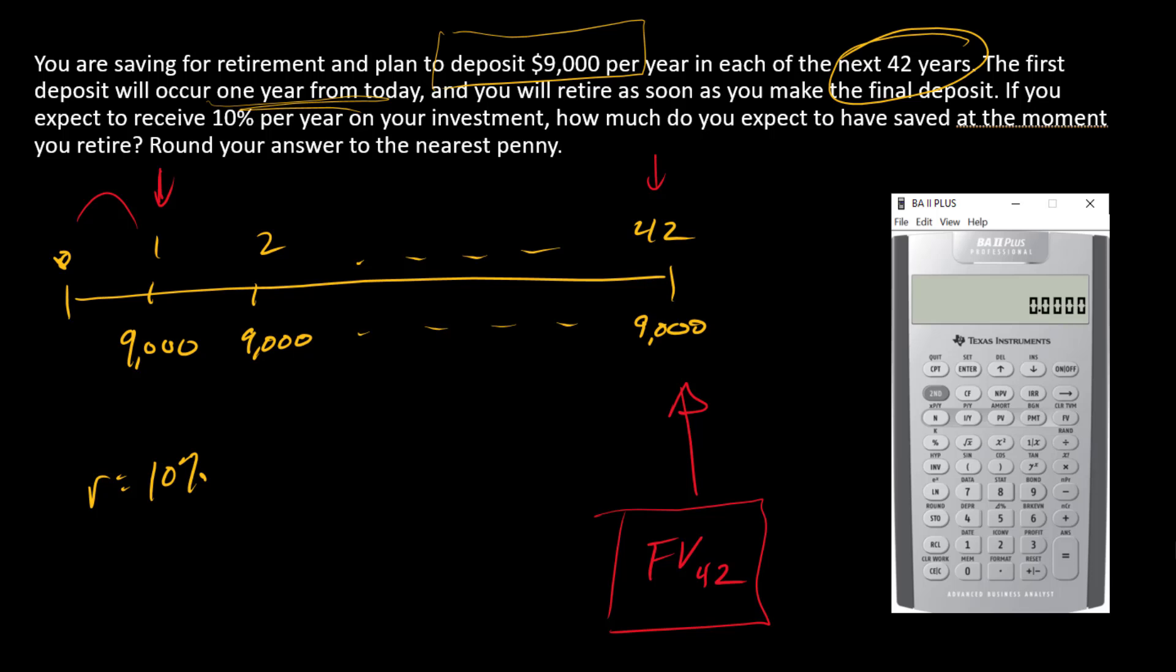Let's go through the keystrokes. First of all, I have nothing happening at time zero, so I'm going to put zero as PV. $9,000 is my payment, so that's going into PMT. There are 42 payments, so 42 goes into N. My discount rate is 10%, so I enter that as 10, not 0.1—I enter it as 10. So 10 goes into I.